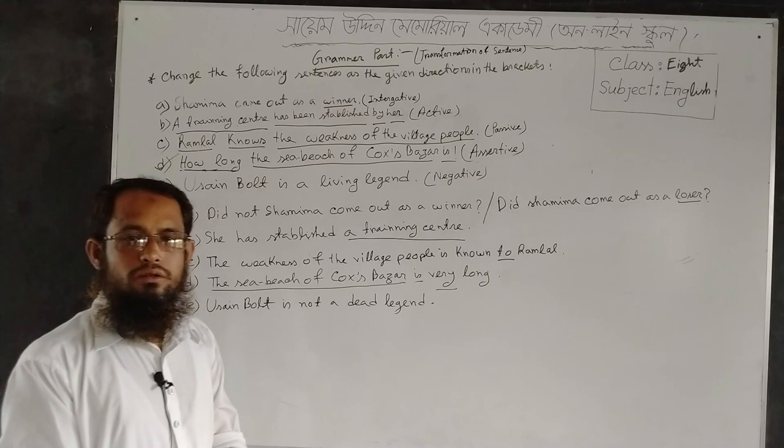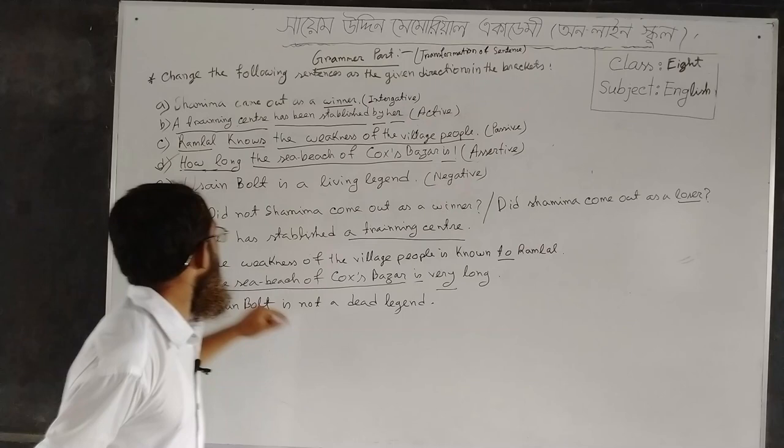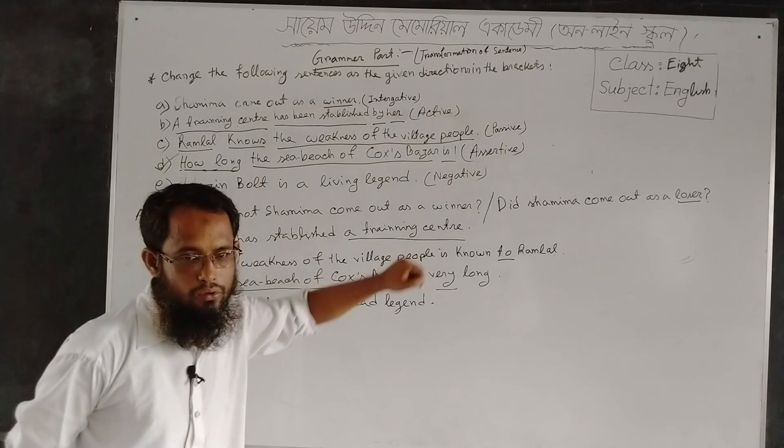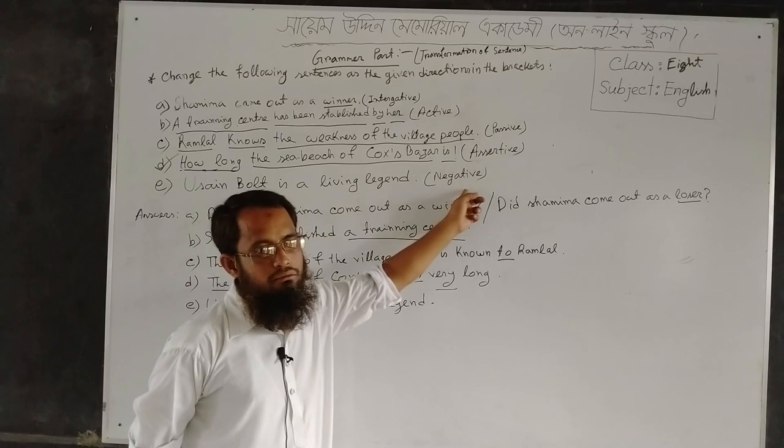We have come to another sentence. Usain Bolt is a living legend. Usain Bolt is the subject; 'is' is the be-verb used as a principal verb. It is a sentence of present indefinite tense. You have to transform it as a negative one.